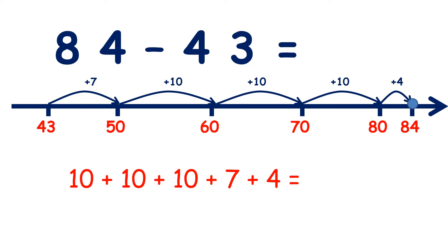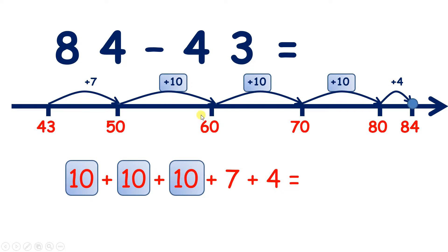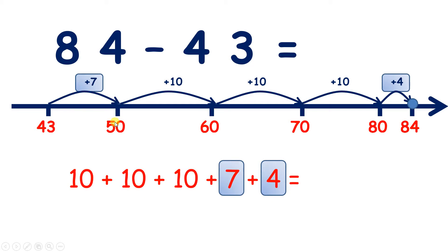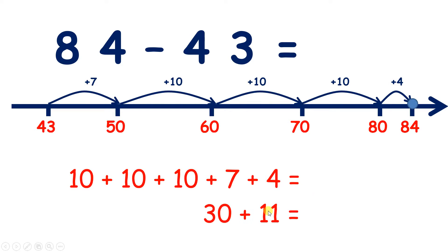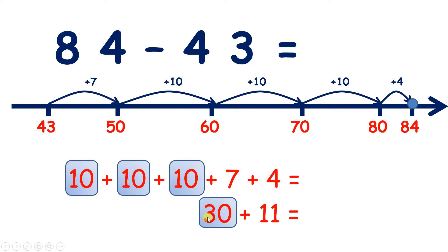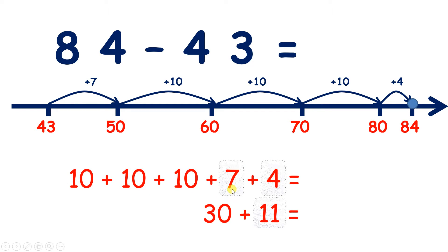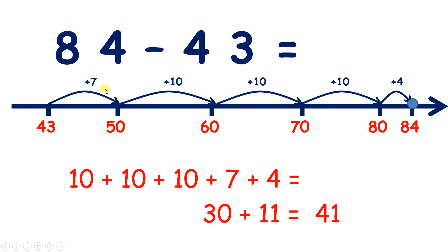So adding up all the jumps I've made, I have 10 plus 10 plus 10 plus 7 plus 4. So there are my 3 tens, and there I have 7 and 4. So I have 30 plus 11, because 10 plus 10 plus 10 is 30, and 7 and 4 make 11. So 30 plus 11 is 41, so 84 subtract 43 is 41.